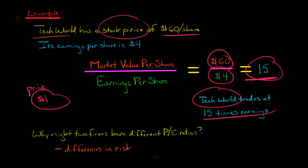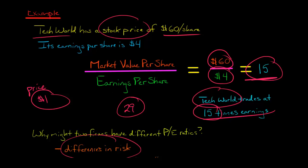You'll have situations where companies have very different P/E ratios, sometimes two firms in the same industry. You might wonder why. For example, Tech World is at 15 times earnings, but another company might be trading at 29 times earnings. It could be that there are differences in risk between the companies — one company might be a lot riskier, with a higher cost of equity capital.